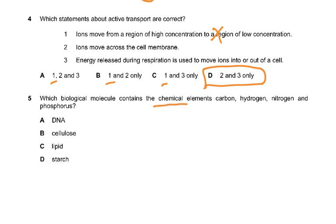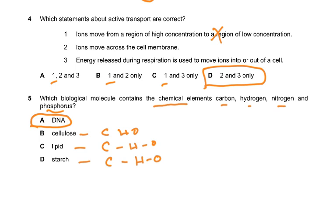Question 5: which biological molecule contains the chemical elements carbon, hydrogen, nitrogen, and phosphorus? Phosphorus is only present in one biological molecule — DNA. The nucleotide is made up of a phosphate group, a nitrogenous base, and a deoxyribose sugar. Cellulose, lipids, and starch only contain carbon, hydrogen, and oxygen, so the answer must be DNA.